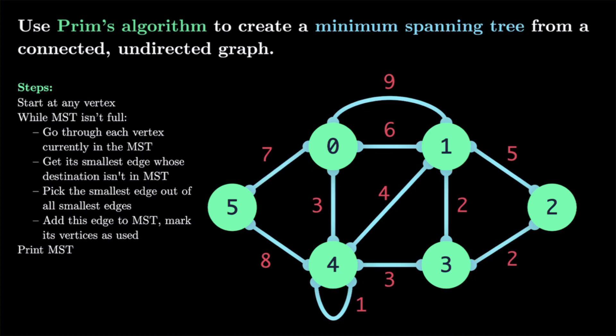Let's go through each step of Prim's algorithm. First, we go through every vertex currently added to the MST. We start with vertex 0, and we go through each of its edges and pick the smallest. The smallest edge going out of 0 is this 3, so we pick it and add its destination, vertex 4, to our used vertices. Now we have 0 and 4.